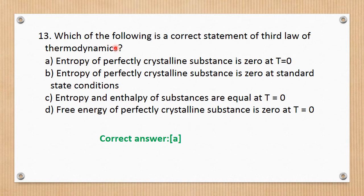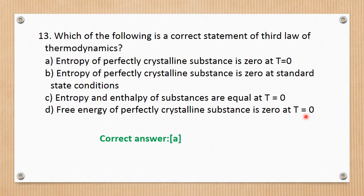Question number 13. Which of the following is the correct statement for the third law of thermodynamics? The entropy of a perfect crystalline substance is zero at T equals zero (absolute zero). This is correct. Other options—standard conditions, entropy equals enthalpy at T = 0, or free energy is zero—are not correct. The correct answer is A.